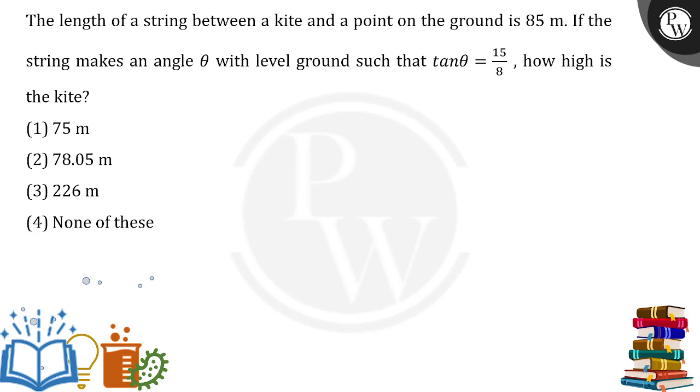First, draw the figure. There's a person flying a kite somewhere in the sky. The distance between these two is 85 meters. The angle made on the ground is theta, and the height of the kite from the ground, which I'm calling h, is what we need to calculate.